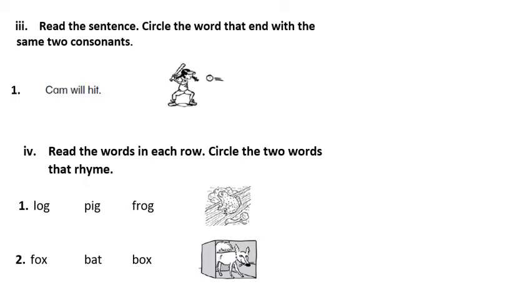Read the sentence. Circle the word that ends with the same two letters other than vowel letters. Number one. Cam will hit. Now which one has same two consonants? It's the word will. Just circle it.